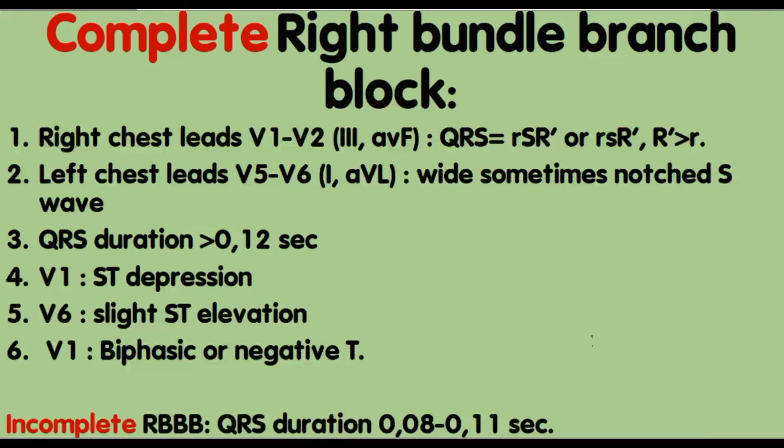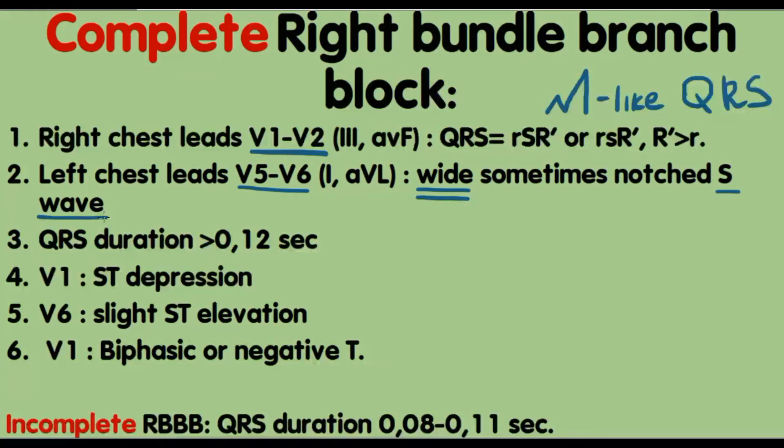Complete right bundle branch block is characterized by M-like QRS in right chest leads, wide and sometimes notched S wave in left chest leads. The duration of QRS complex is more than 0.12 seconds. ST depression in V1 and slight elevation in V6. Biphasic or negative T in V1.